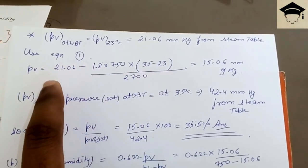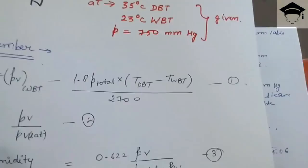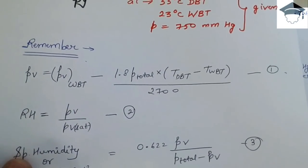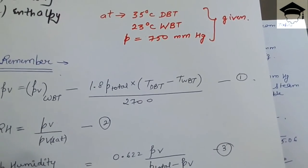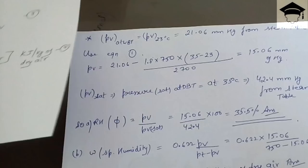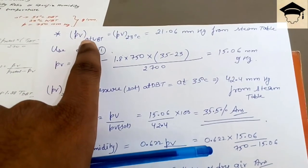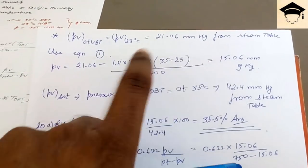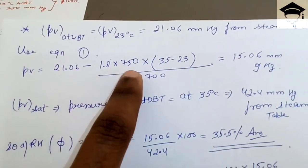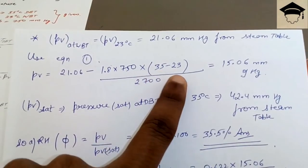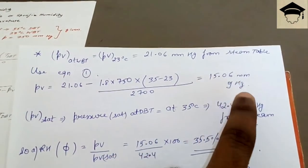Using relation 1: pv = pv(WBT) − 1.8 × P_total × (DBT − WBT) / 2700. Substituting: pv = 21.06 − 1.8 × 750 × (35 − 23) / 2700. Solving, pv = 15.06 mmHg. Also, saturation pressure at DBT (35°C) is found from the steam table as 42.4 mmHg.